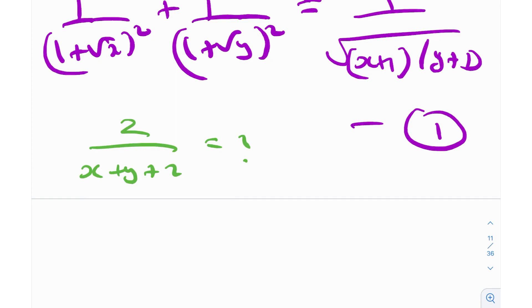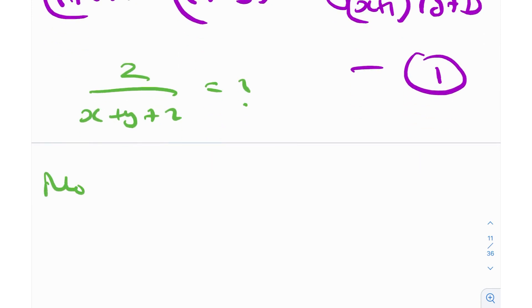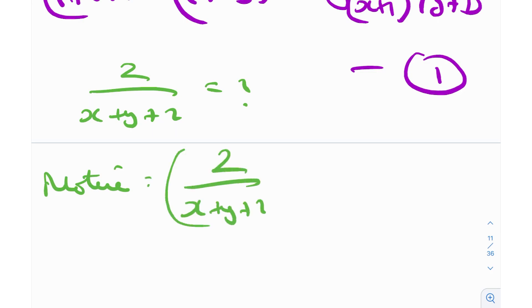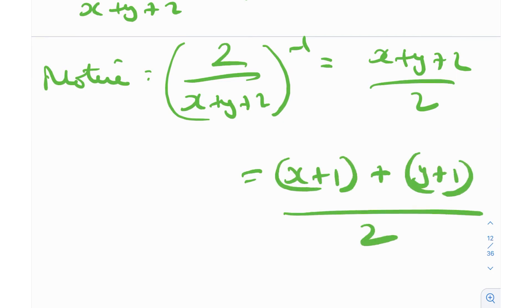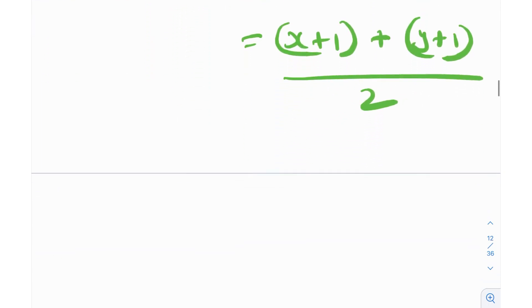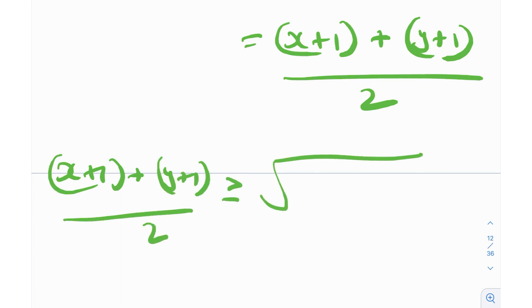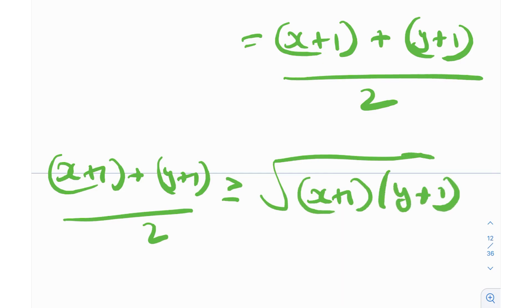The inverse of 2/(x + y + 2) is (x + y + 2)/2, which can be conveniently written as [(x+1) + (y+1)]/2 ≥ √((x+1)(y+1)) — using AM-GM again.